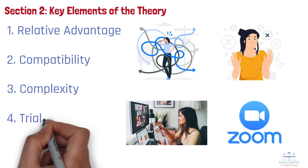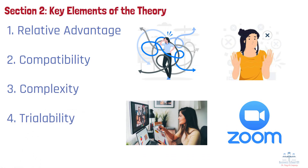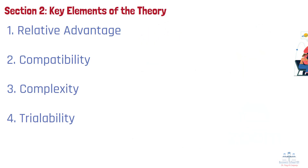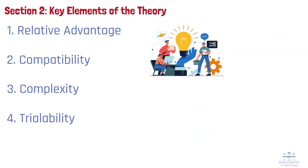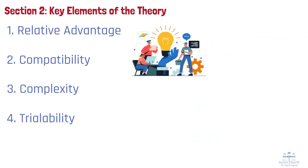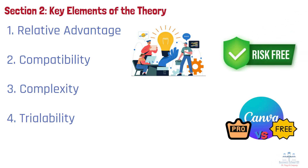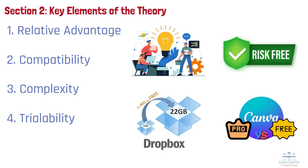Number 4: Trialability. Trialability refers to how easily someone can test the innovation before fully committing. If users can try it risk-free, they're more likely to explore it. SaaS companies like Canva or Dropbox offer free versions of their products so users can experience value first, which accelerates adoption.